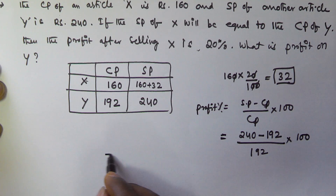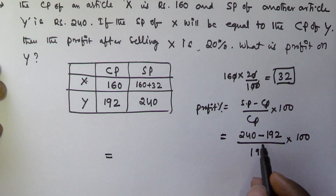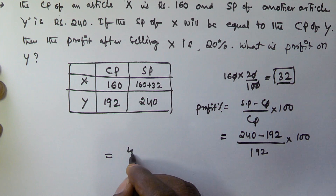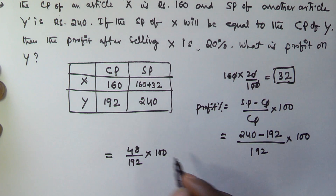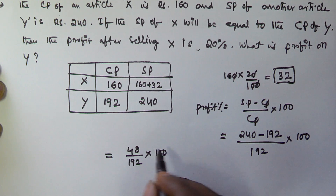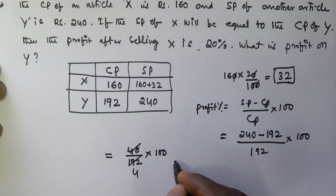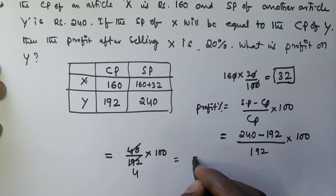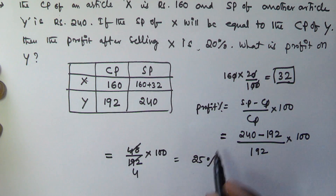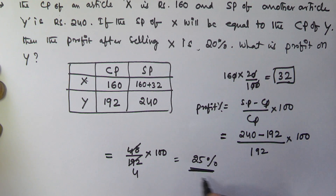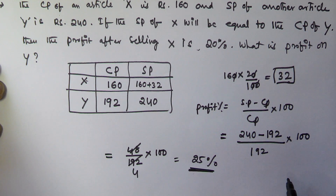That gives 48 / 192 × 100, which equals 25 percent. So on the second article Y, he is getting 25 percent profit. I hope you got this. Thank you very much for watching this video — please subscribe to my channel.